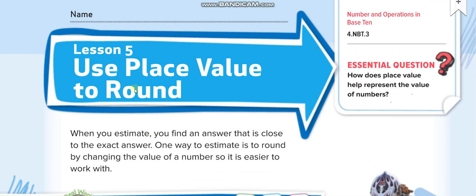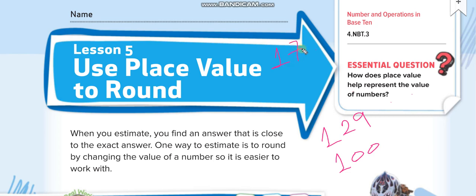First of all, let's understand how we round numbers. For example, if I give you a number like 129 and I ask you to round it to the nearest hundred — is it close to 100 or close to 200? Of course it's close to 100, so its rounding will be 100. But if I give you 177, that number is close to 200, so its rounding is 200.